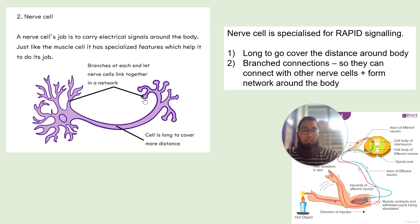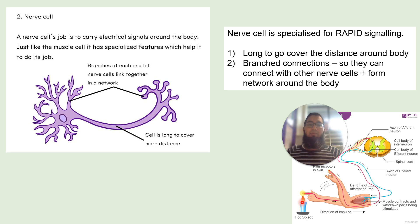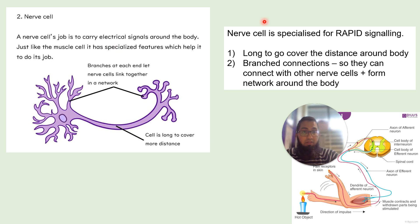Nerve cells are specialized for rapid signaling. For example, when you accidentally touch something hot, you remove your hand very fast without thinking — that's the nerve cells working. Nerve cells are very long so they can cover distances across the whole body. They also have lots of branches which allow them to communicate with other nerve cells and form a network around the whole body called the nervous system.